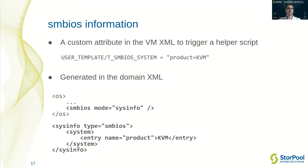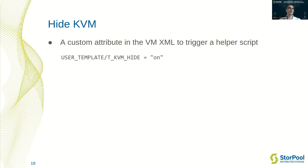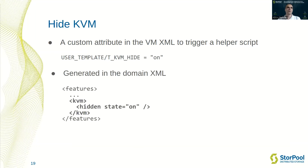If someone wants the opposite — to hide that the virtual machine is running on KVM — there is an option in LibVirt for this as well. And if this should be triggered conditionally, it can again be done using a predefined custom attribute in the virtual machine definition.